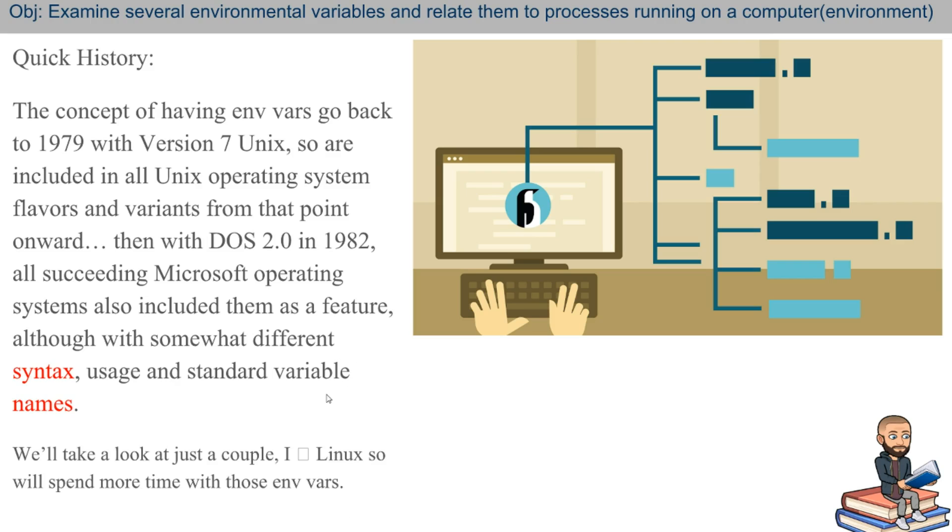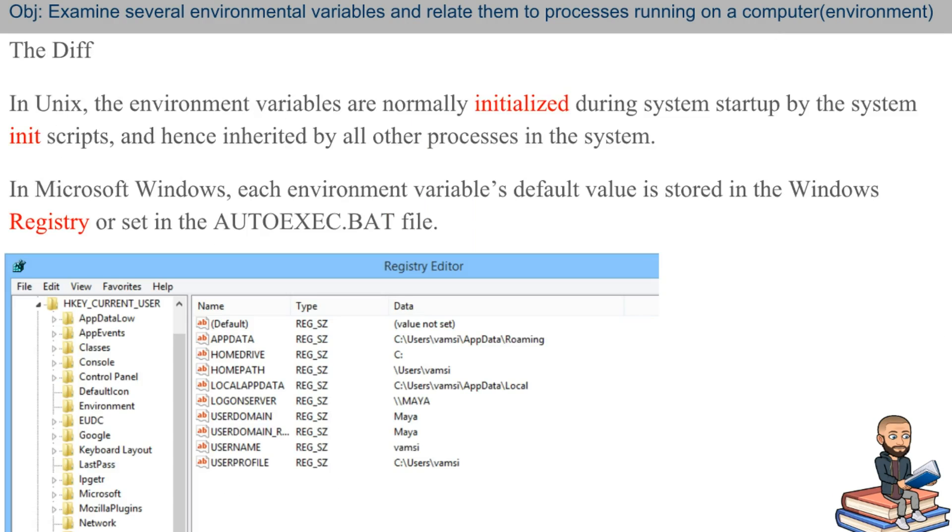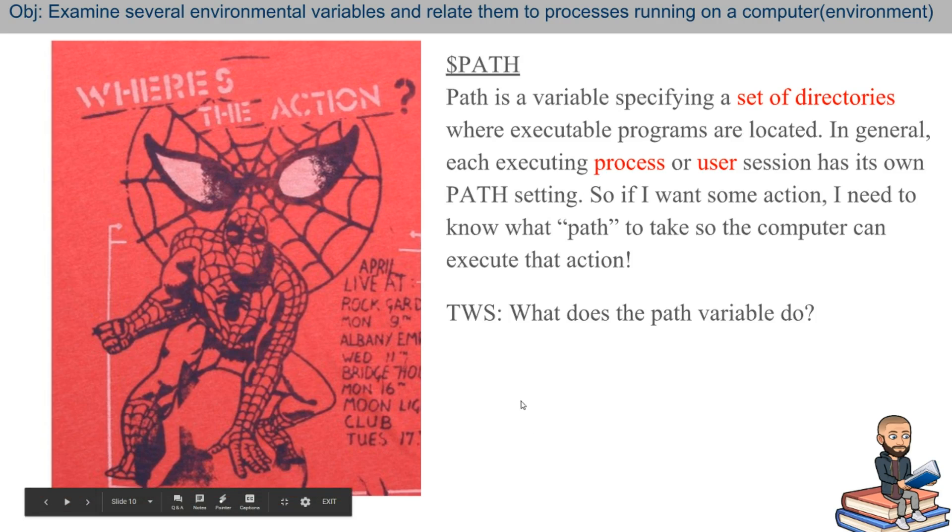Sometimes it's frustrating. Sometimes it doesn't matter. Like, at least path is the same on all of them. So in Unix, the environmental variables are normally initialized during the system startup. This is being done by the init scripts. And so all the processes on the system inherits these variables. In Microsoft Windows, each environment variable's default values is stored in the registry, which is an aha moment for me that the registry is the environmental variables.